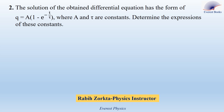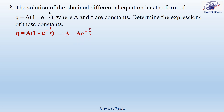Part 2. The solution of the obtained differential equation has the form Q equals A times (1 minus e to the power minus t over tau), where A and tau are constants. Determine the expressions of these constants. Expanding: Q equals A minus A times e to the power minus t over tau. Now let's differentiate Q with respect to time. A is constant, so the derivative of A with respect to time is 0. The derivative of minus A times e to the power minus t over tau equals minus A times (minus 1 over tau) times e to the power minus t over tau. Therefore, dQ by dt equals A over tau times e to the power minus t over tau.